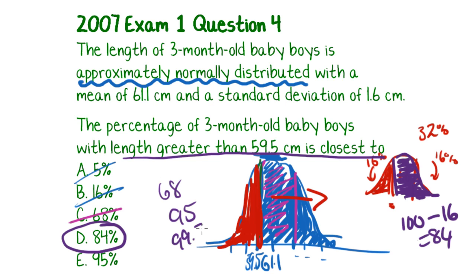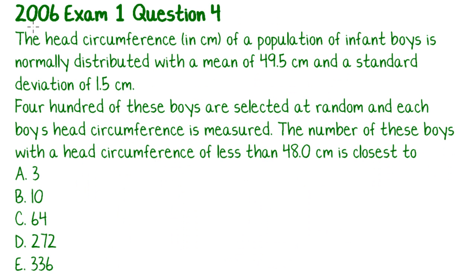So even though they haven't asked you specifically for one of these 68 percentages 95, 99.7, using the information you have about corresponding percentages that work within those, this is how they might phrase one of the questions to you. And from there you just use logic. This question appeared on the 2006 exam one and it was also question four just randomly.